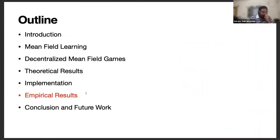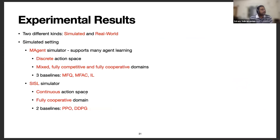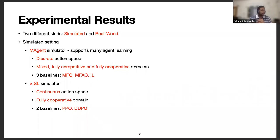Given these two algorithms, we have a series of empirical results on two settings — a simulated setting and a real-world setting. In the simulated setting, we consider two different simulators. The first is the MAgent simulator, which supports many-agent learning with a discrete action space, and under which falls the battle domain. The second is the SISL simulator, which uses a continuous action space. In the discrete case, we use three baselines: independent Q-learning, MFQ, and MFAC from Yang et al. In the SISL simulator, we use PPO and DDPG as baselines for continuous control.